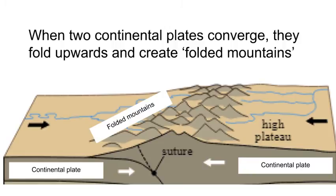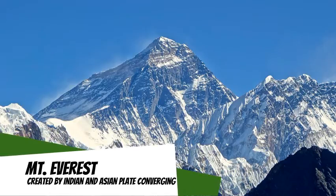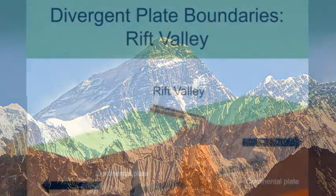When two continental plates converge, neither one is dense enough to subduct under the other. As a result, the continental crust folds upward as it has nowhere else to go, creating a chain of folded mountains. Think of two cars crashing into each other head on — this action is similar to the physical force that creates folded mountains. The most famous folded mountains are the Himalayas, where the Indian plate is converging with the Asian plate, pushing the Himalayas higher and higher.